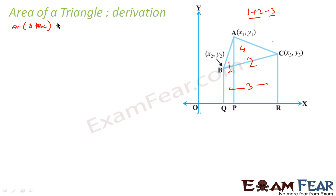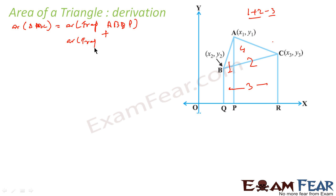So, area of triangle ABC = area of trapezium ABPQ + area of trapezium APRC − area of trapezium BQRC. This gives us the area of the triangle in terms of three trapezium areas.